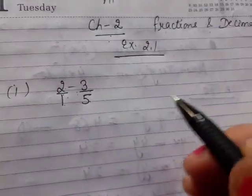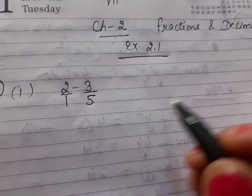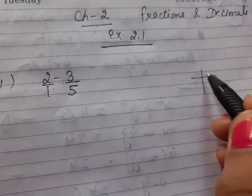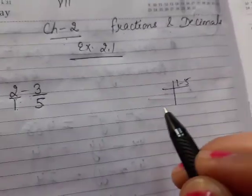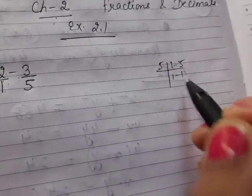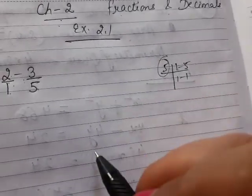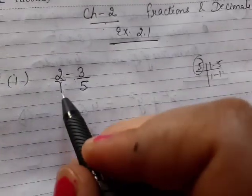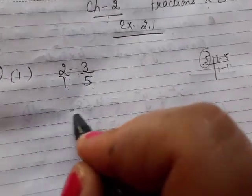When we take LCM, what do we do? We need the denominators - 1 and 5. So the LCM is only 5. Here LCM is 5. When LCM comes, what do we do? We divide the LCM by the denominator.